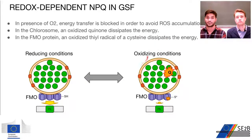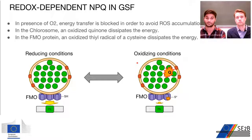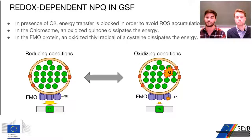Green sulfur bacteria are strictly anaerobic bacteria. Under relaxing conditions their photosynthesis capacity is maximum, but under oxidized conditions there is a dissipation of energy. This dissipation takes place at the level of the chlorosome and at the level of the FMO protein, where the dissipation is carried out by oxidized cysteine.